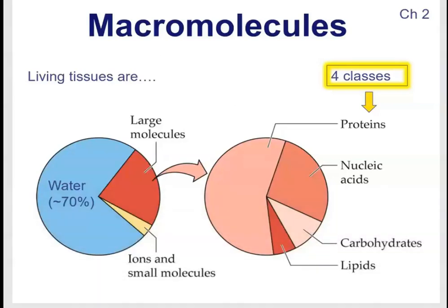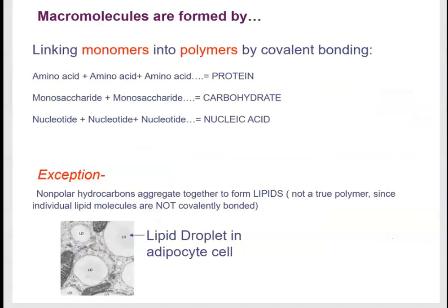This is part three of the biochemistry unit, covering macromolecules. Macromolecules make up a large portion of living tissues, with the rest being water. There are four different classes of macromolecules: proteins, nucleic acids, carbohydrates, and lipids. Macromolecules are made up of smaller units called monomers, which are linked into polymers by covalent bonding.